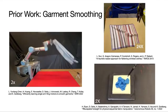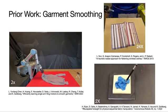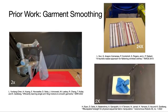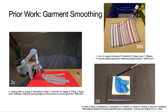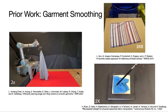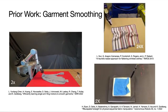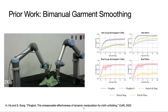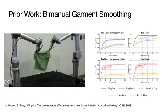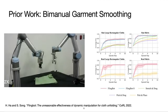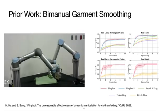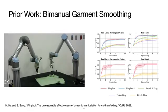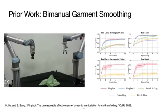There is lots of great related work on garment smoothing, where the goal is to flatten an initially crumpled garment. One of the main challenges is to increase the speed, as these methods require a large number of interactions. A recent breakthrough by Ha and Song showed how to use dynamic motions on a bimanual robot to rapidly smooth the garment, achieving around 80% garment coverage within a few interactions, a significant speed up over prior works.